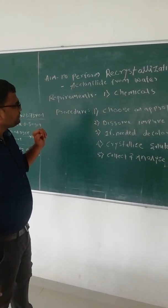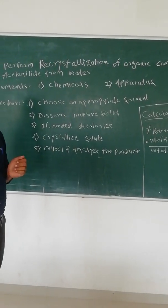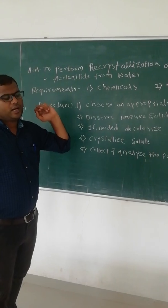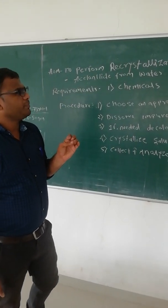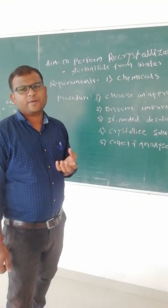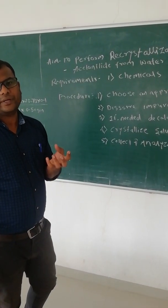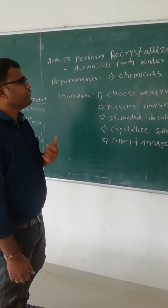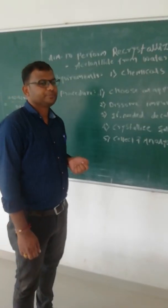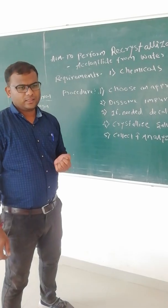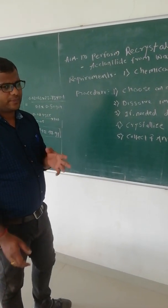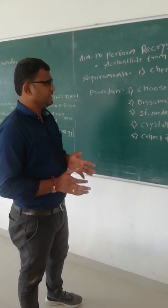It will require chemicals and apparatus. For chemicals, acetanilide is required. And if there is the presence of some coloring impurity, at that time we use activated charcoal — a decolorizing agent. For apparatus, we require a conical flask, beaker, funnel for separation, separating funnel, and measuring cylinder.